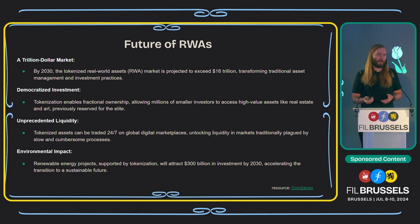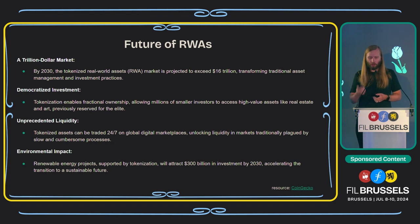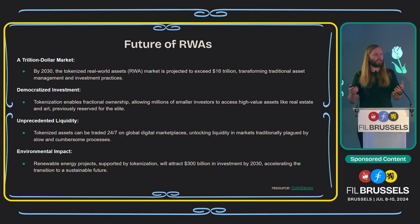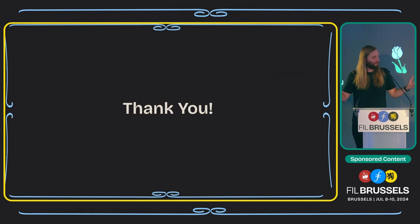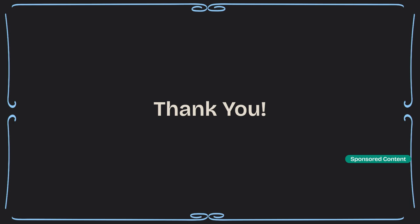Regarding environmental impact: renewable energy project tokenization will attract $300 billion in investment by 2030 and accelerate the transition to a sustainable future. When you know you're purchasing a carbon credit and it's provable on chain, corporations will have more incentive to do so — and that's a need we have in the world. I'm very excited to see that future. That's everything about RWAs — if anyone has any questions, I can try to answer them.